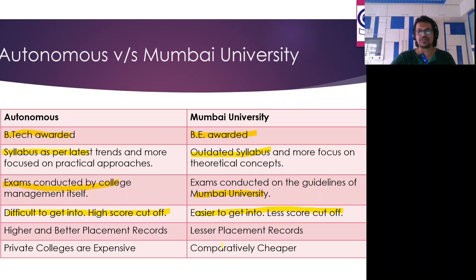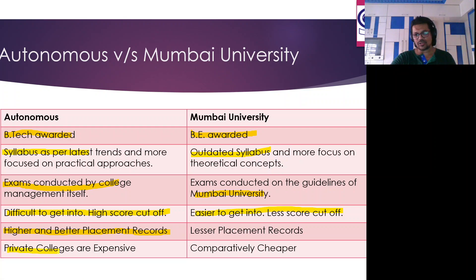Placements are much better in autonomous colleges. For example, at VIT, Microsoft does placements with packages of around 35 to 40 lakhs per annum — so at age 22 to 23 when you're coming out, such high packages are being offered. Fees wise, autonomous colleges are a little expensive. Mumbai University affiliated fees might be around 1.2 to 1.3 lakhs per year, whereas autonomous might be around 2.5 to 3 lakh rupees per year. Overall, autonomous is always the better choice.